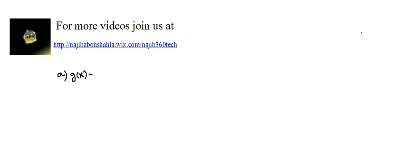Functions algebra, video number one, part A. Given that G of X is equal to 2x plus 3, and given that B equals G of A, we have to find G of B in terms of A. First, B is given as G of A, so we need to find what B is.